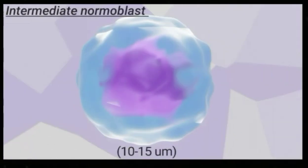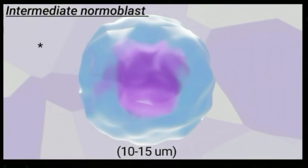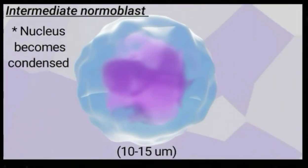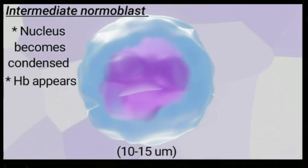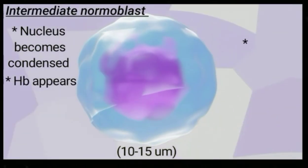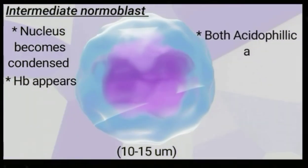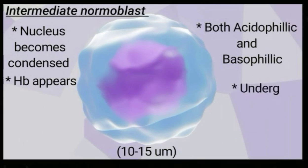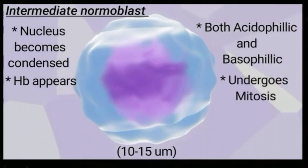Then early normoblast differentiates into intermediate normoblast. The intermediate normoblast has a condensed nucleus, hemoglobin is visible, it stains both acidophilic and basophilic, and undergoes mitosis.